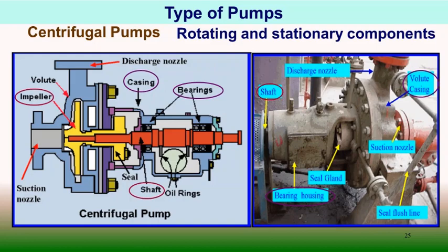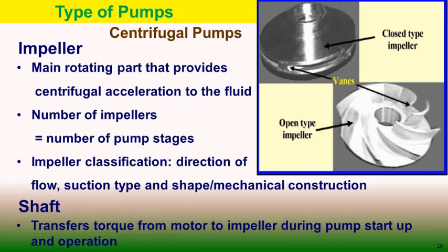A centrifugal pump is one of the simplest pieces of equipment in any process plant. Liquid is forced into an impeller either by atmospheric pressure or, in a jet pump, by artificial pressure. The vanes of the impeller pass kinetic energy to the liquid, causing it to rotate and leave the impeller at high velocity. The impeller is surrounded by a volute casing or, in a turbine pump, a stationary diffuser ring, which converts the kinetic energy into pressure energy.